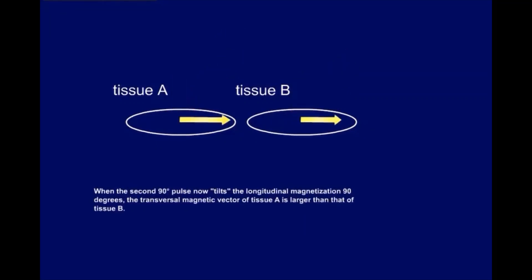When the second 90 degree pulse now tilts the longitudinal magnetization 90 degrees, the transversal magnetic vector of tissue A is larger than that of tissue B.